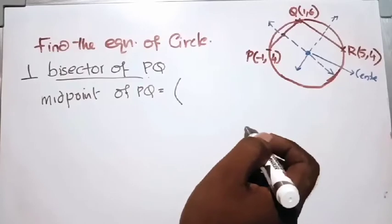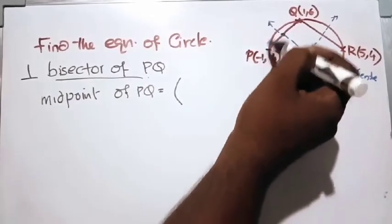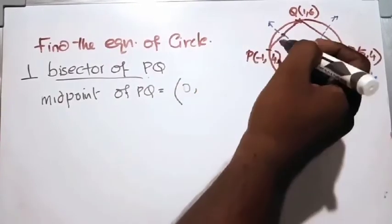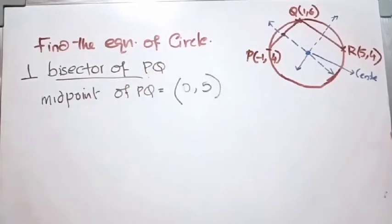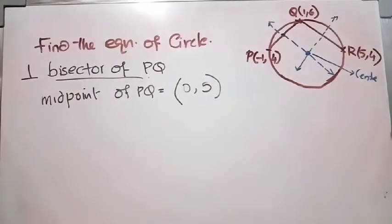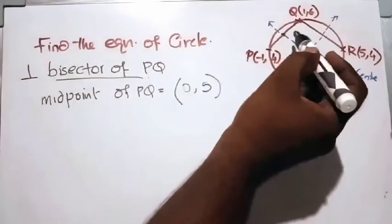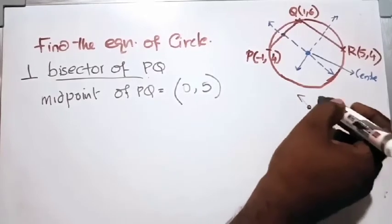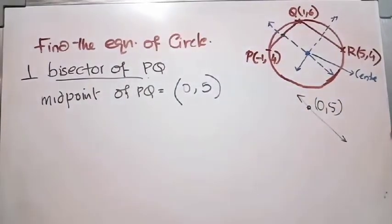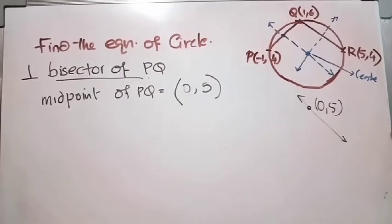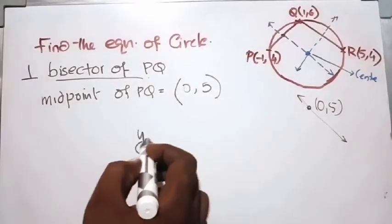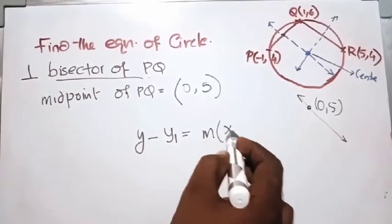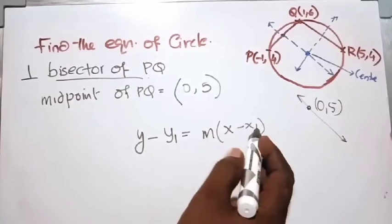The midpoint of PQ is the average of the x-coordinates and the y-coordinates: (minus 1 plus 1) divided by 2 equals 0, and (4 plus 6) divided by 2 equals 5. So the midpoint of PQ is (0, 5). This midpoint is a point on the perpendicular bisector. We also need the gradient, using the point-gradient form y minus y1 equals m(x minus x1).